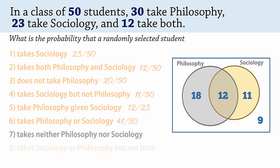For number 7, neither philosophy nor sociology is the complement of either philosophy or sociology, and that refers to the 9 students outside the two circles here. So the probability is 9 over 50, or 0.18.